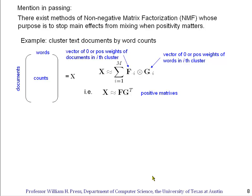As a quick mention in passing, this is a problem that people have thought about before. And there exist methods of so-called non-negative matrix factorization, or NMF, whose purpose is exactly to stop main effects from mixing. And how can you do that? What can you impose? What other information do you have to try to disentangle the main effects? And the answer is, sometimes you have positivity and that can be used.